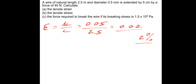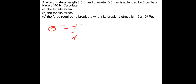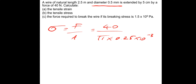Next is the tensile stress. Tensile stress sigma is force over area. The force is 40 newtons divided by the area, which is pi r squared. We have a 0.5 millimetre diameter, so the radius is 0.25 times 10 to the minus 3 metres, and then we square that. Putting all that into the calculator gives 203.7 times 10 to the 6 pascals, which rounds to 204 megapascals.